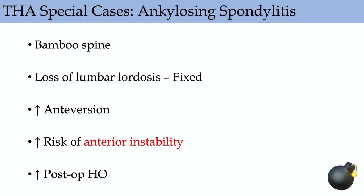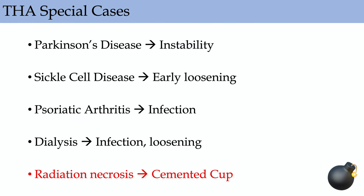Special cases: for ankylosing spondylitis — bamboo spine, loss of lumbar lordosis, fixed lumbar spine. These patients typically have increased anteversion and are at risk for anterior dislocation. HO prophylaxis with either radiation or six weeks of indomethacin; radiation can be given before surgery or up to three days after, one dose of 600 to 800 centigray. For Parkinson's disease, worry about instability — more likely to use dual mobility cups. Sickle cell disease: risk of early loosening and very sclerotic femurs making preparation challenging. Psoriatic arthritis: risk of infection, as with any rheumatologic disease with prednisone or DMARDs. Dialysis patients: very high risk of infection — kidney disease gives the highest infection risk. Radiation necrosis after cancer treatment is now the only indication for a cemented cup.